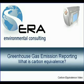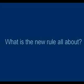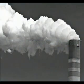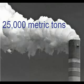What is greenhouse gas emission reporting? What is carbon equivalence, and what is the new rule all about? Under the greenhouse gas rule, suppliers of fossil fuels or industrial greenhouse gases, manufacturers of vehicles and engines, and facilities that emit 25,000 metric tons or more per year of greenhouse gases are required to submit annual reports to the EPA.